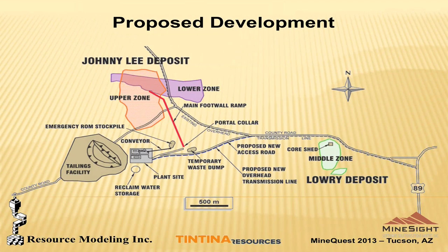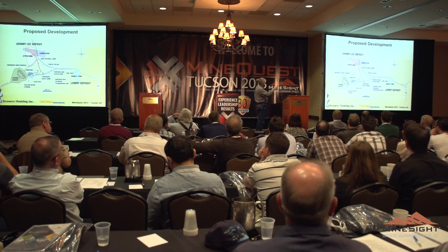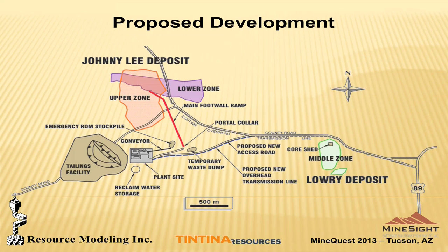This is a quick plan map showing the layout of the project. There are two copper-rich horizons known as the Johnny Lee deposit — an upper and a lower lens — and then there's a middle zone located off to the east. The decline is shown by the red line and will be driven to the north. The plant area is located near the portal, with the tailings impoundment area over in this area.